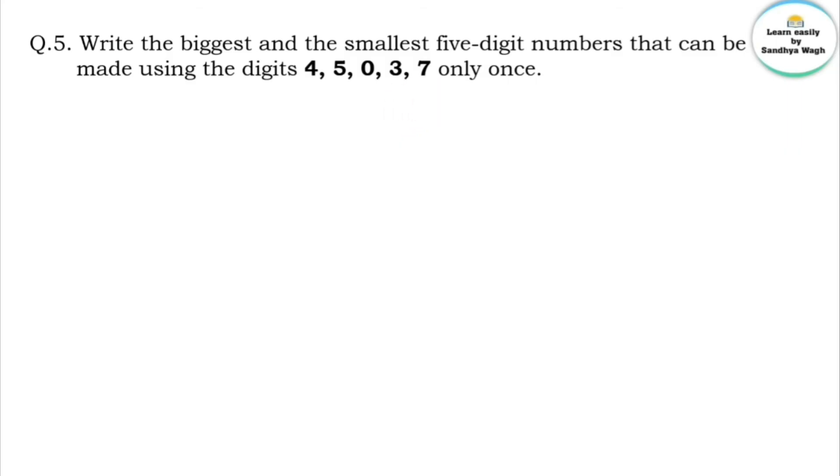Using the digits 4, 5, 0, 3, 7 — we need to find the biggest and smallest 5-digit numbers that can be made from these digits.